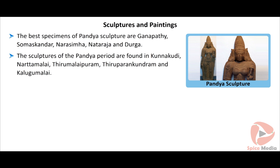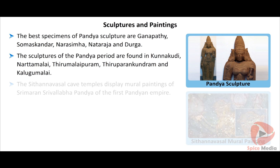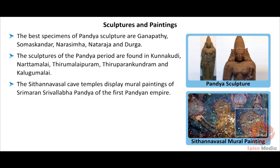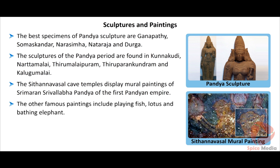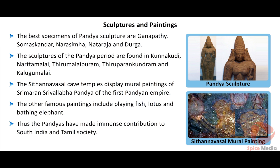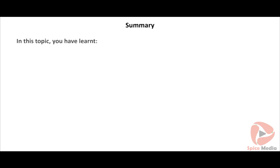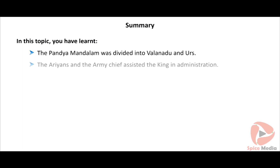These Sabha Mandapas served as places of social gathering, religious kirtanas, recitals, public meetings and Kadhanataka. The Pandya sculptures are noted for their beauty and ornamentation. The best specimens of this period are Ganapati, Somaskandar, Narasimha, Natraja and Durga. The sculptures of the Pandya period are found in Kunnakudi, Narta Malai, Tirumalai Puram, Tiruparan Kundram and Kalugu Malai.